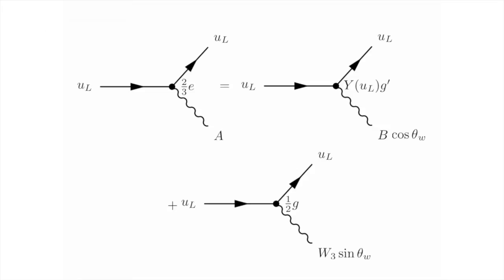Now, as before, we can move the cosine of the weak mixing angle from the particle B and think of it as just part of the strength of the interaction. We can do just the same for the sine of the weak mixing angle. Now, filling in the definitions of the cosine and the sine of the weak mixing angle, we see that in both cases you just get the electric charge in. This leads to a simple equation that two-thirds times the electric charge equals the weak charge of the left-handed up times the electric charge plus a half times the electric charge. The solution is that the weak charge of the left-handed up is one-sixth.